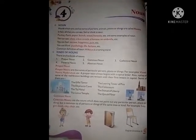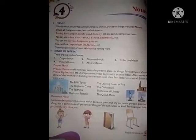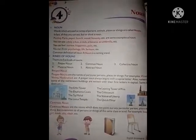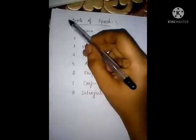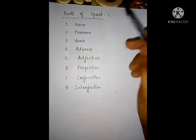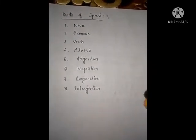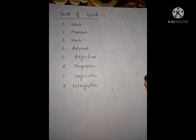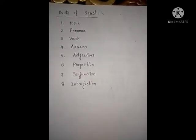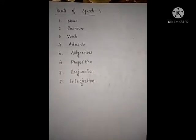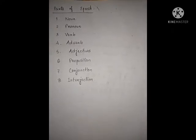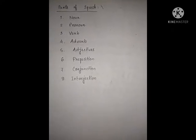So before we read about noun, we have to know how this noun comes from. We have to know about parts of speech. Parts of speech — what do we mean by this? Parts of speech means a speech is made of different parts, or we can say a sentence is also made up of different parts. After we join different meaningful words, then we can get a meaningful sentence.